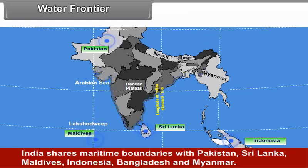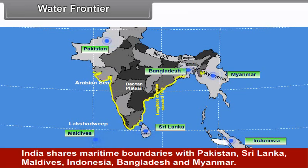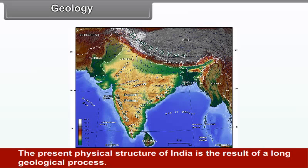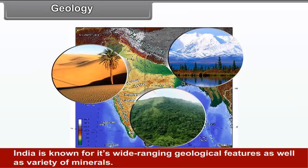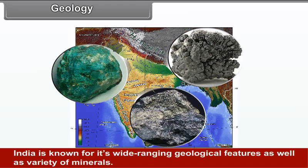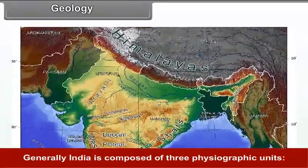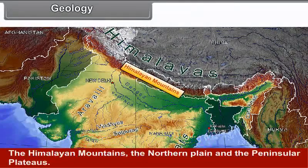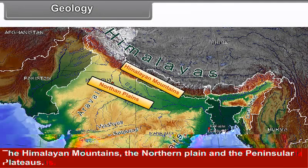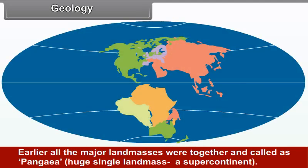India is bounded by the Arabian Sea in the west and southwest, the Bay of Bengal in the east and southeast, and the Indian Ocean in the south. Kanyakumari is the southern tip of the Indian Peninsula. Sri Lanka is separated from India by the Gulf of Mannar and the narrow channel of Palk Strait. India shares maritime boundaries with Pakistan, Sri Lanka, Maldives, Indonesia, Bangladesh, and Myanmar.